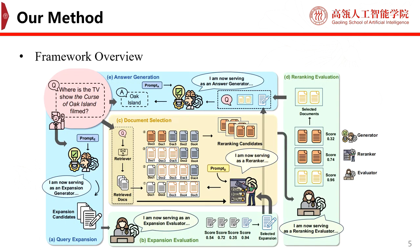Here is the overview of our framework. There are three types of roles and five main steps. First, the query expansion generator aims to generate query expansion according to the question. Second, the expansion evaluator selects the best query expansion. Third, the document re-ranker re-ranks the top key documents according to the question and the generated expansion. The fourth step is the re-ranking evaluator, which selects the best re-ranked document.